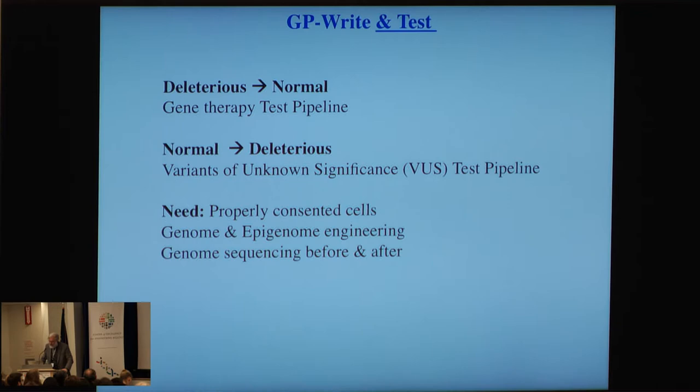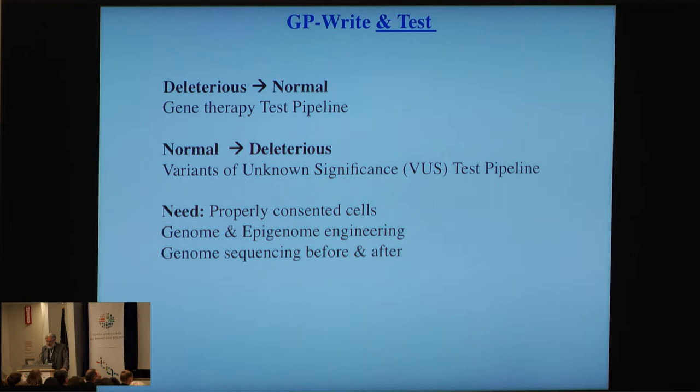Hopefully everyone on the planet will eventually be sequenced. For this we need properly consented cells, and we turn to the Personal Genome Project for those — Jason Bobe will talk about that. We have genome and epigenome engineering. I've already mentioned some of our genome engineering tools. I just wanted to take a moment about epigenome engineering: in order to do the read, write, and test, the testing needs to be able to produce almost any kind of cell or organ in the human body without actually making a human being.